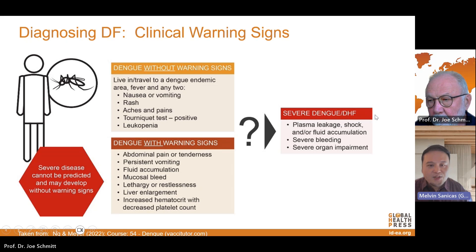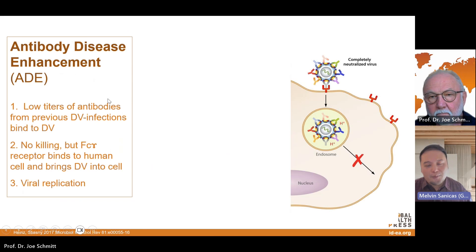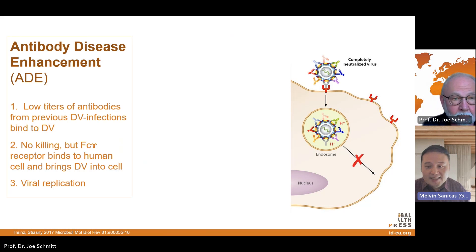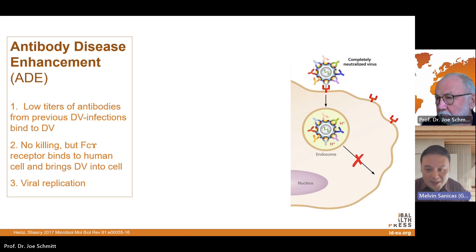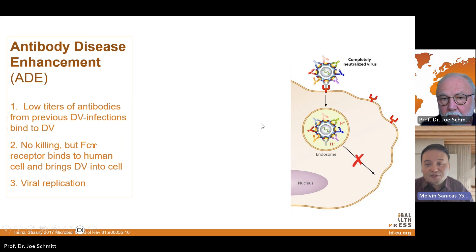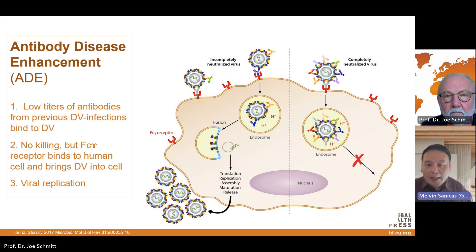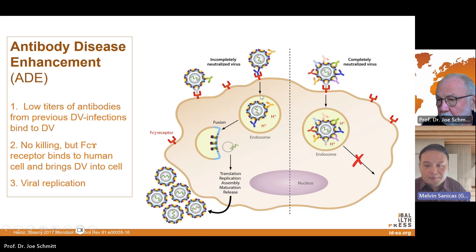When a dengue infection of the same serotype infects an individual, existing antibodies can neutralize those dengue viral particles. But when pre-existing antibodies present in the body are from a primary dengue infection, and they bind to an infecting dengue virus particle during a subsequent infection with a different dengue serotype, the virus is not completely neutralized and this is when antibody-dependent enhancement occurs.